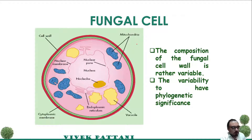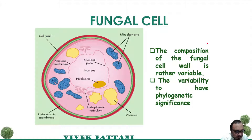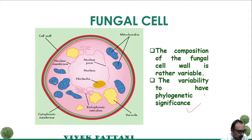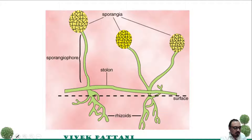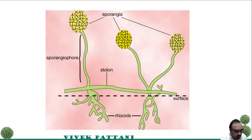The fungal cell composition is basically variable, and its variability has phylogenetic significance. This basic structure of a mold may contain rhizoids, but they are not true roots.